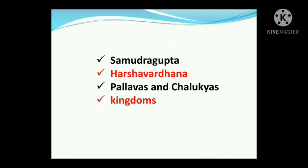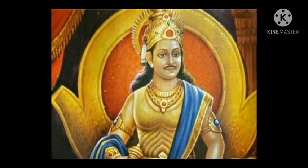The four categories are: Samudragupta, Harshavardhana, Pallavas and Chalukyas, and Kingdoms. At first, we will discuss about Samudragupta. Samudragupta was a famous ruler of a dynasty known as the Guptas.